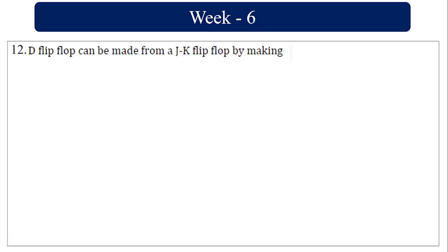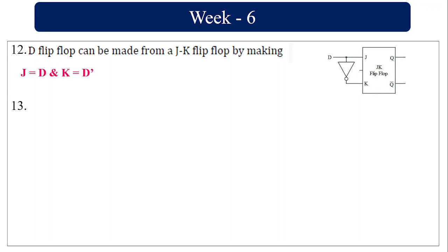A D flip-flop can be made from a JK flip-flop by making J equal to D and K equal to D̅.